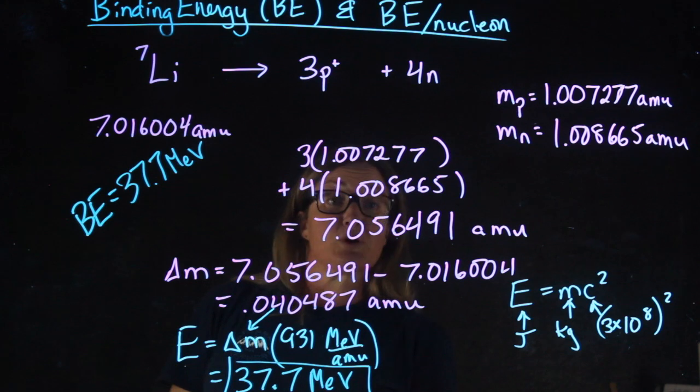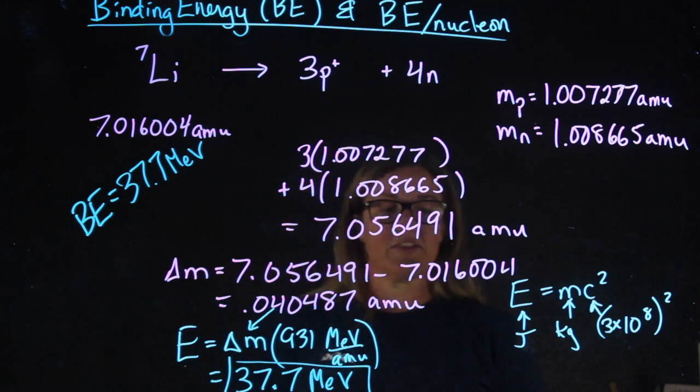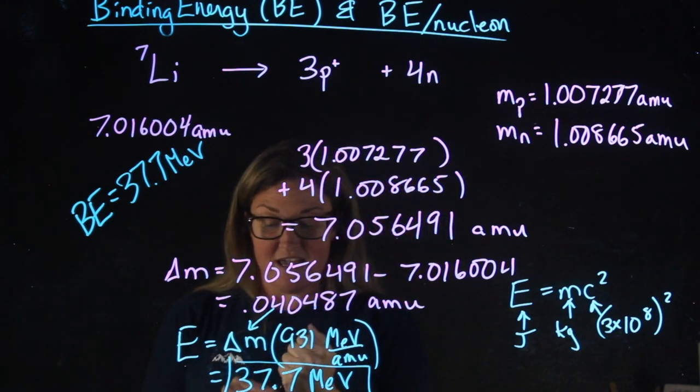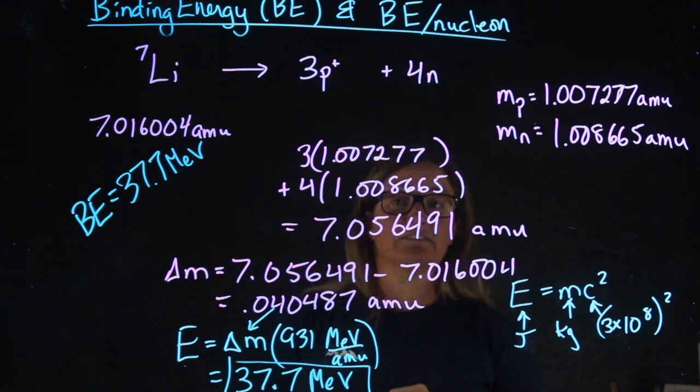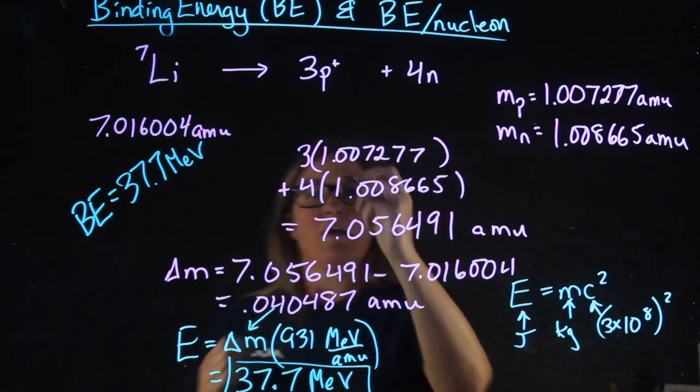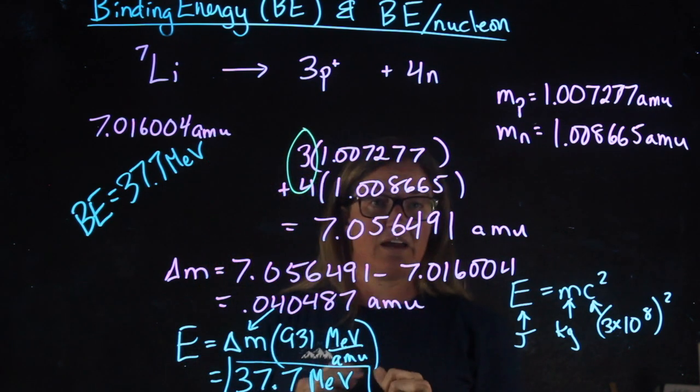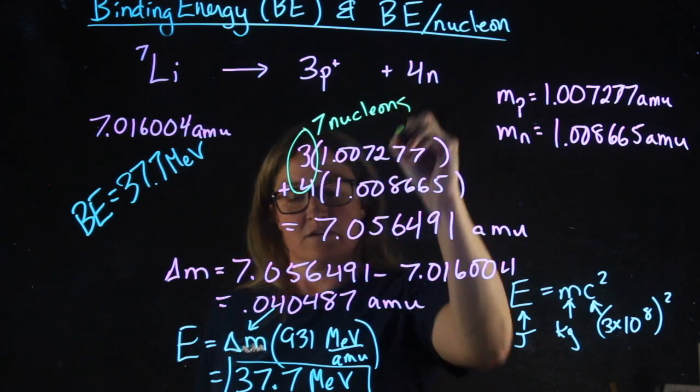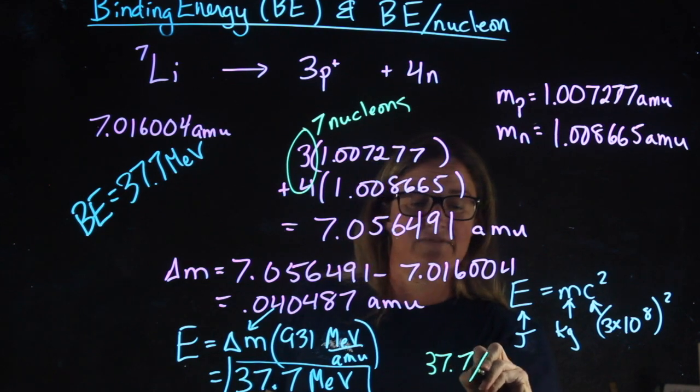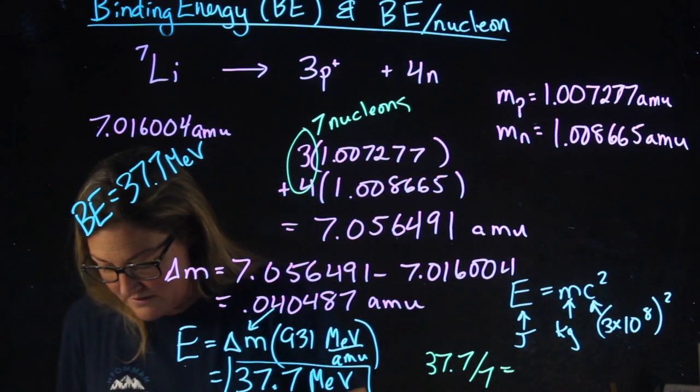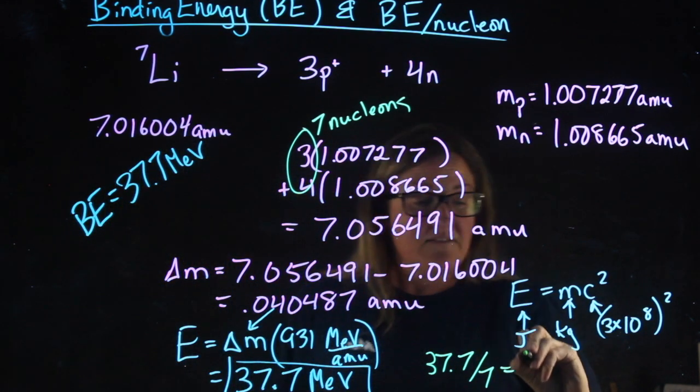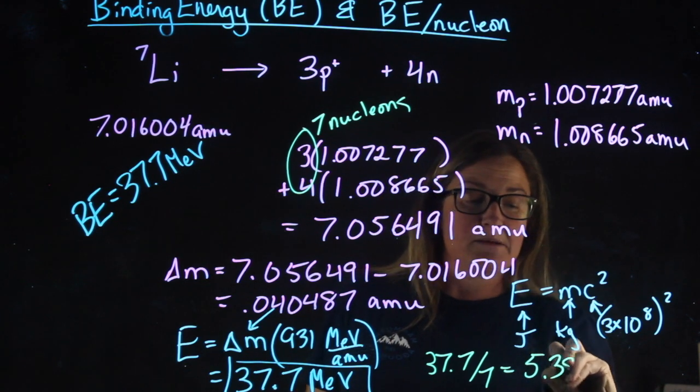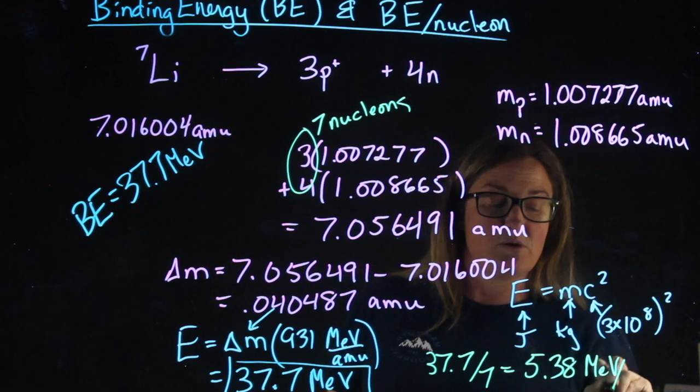If I wanted the binding energy per nucleon, it's not hard to do. It requires knowing what a nucleon is. A nucleon is something that lives in a nucleus. There are 3 protons and 4 neutrons, so this has 7 nucleons. Taking 37.7 and dividing by 7 gives me 5.38 MeV per nucleon.